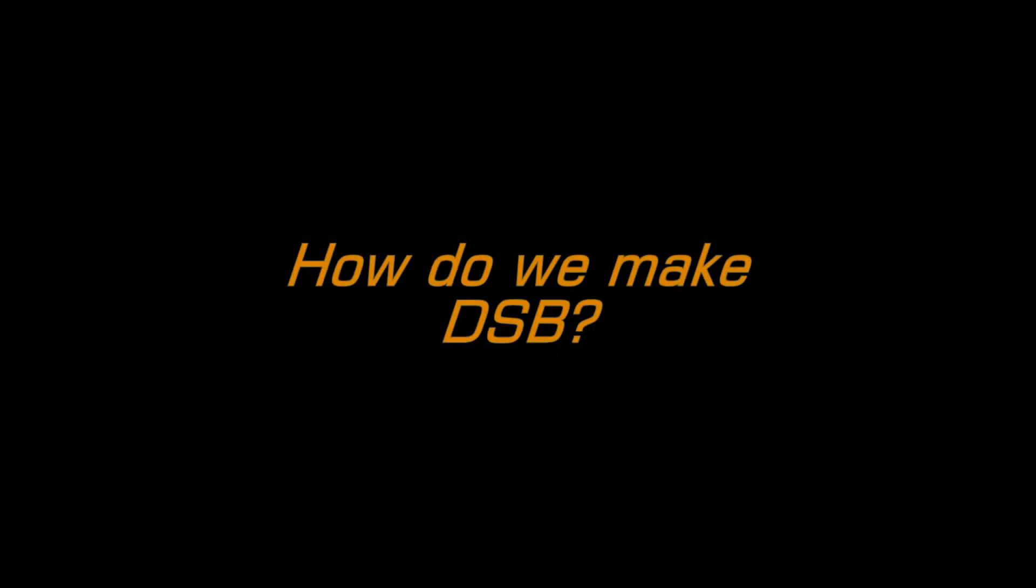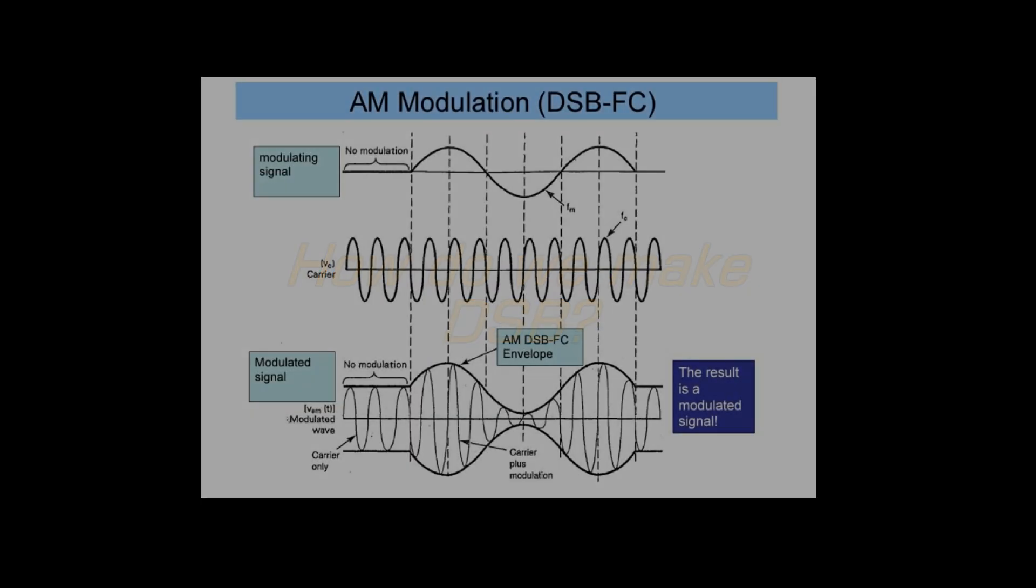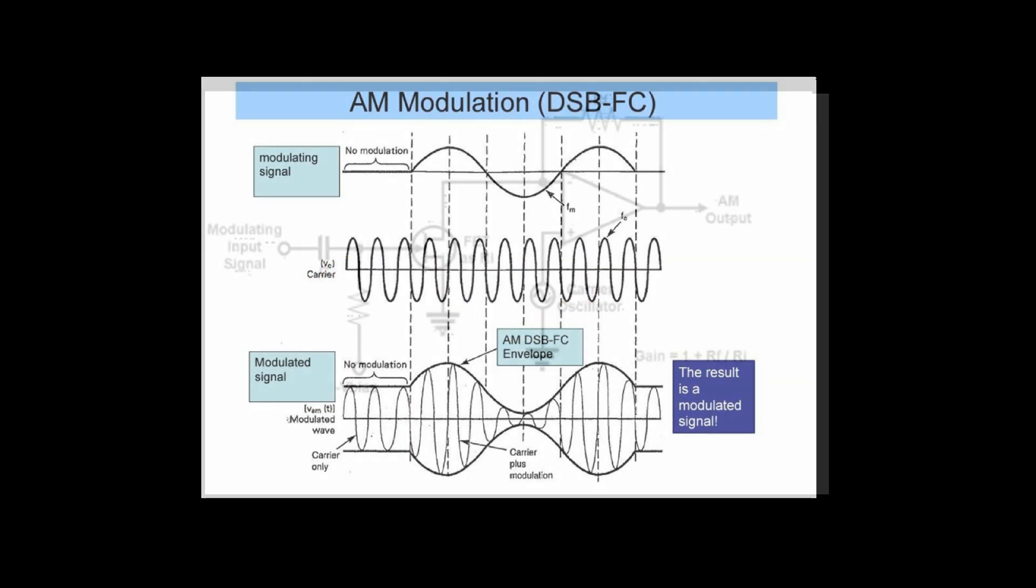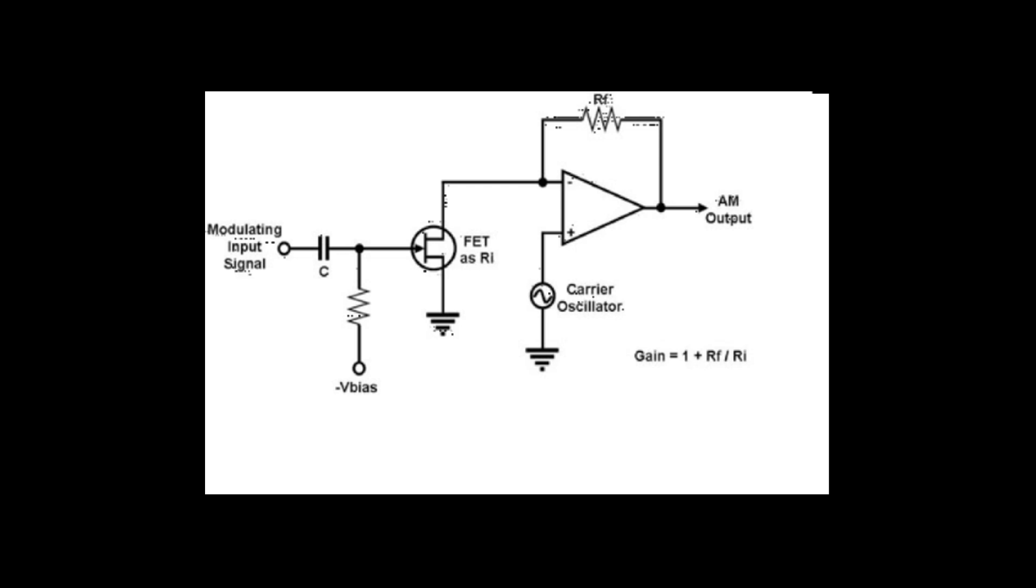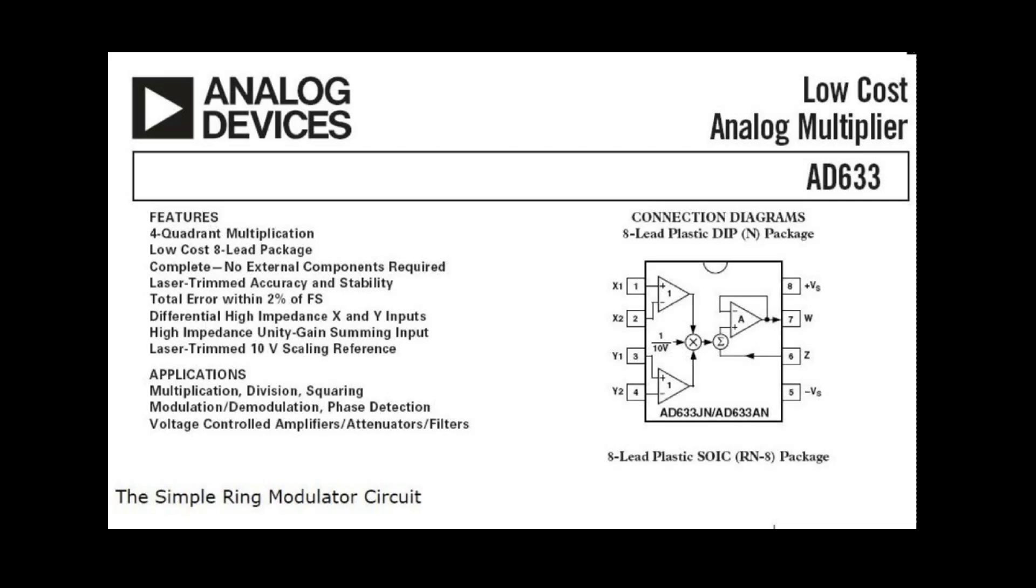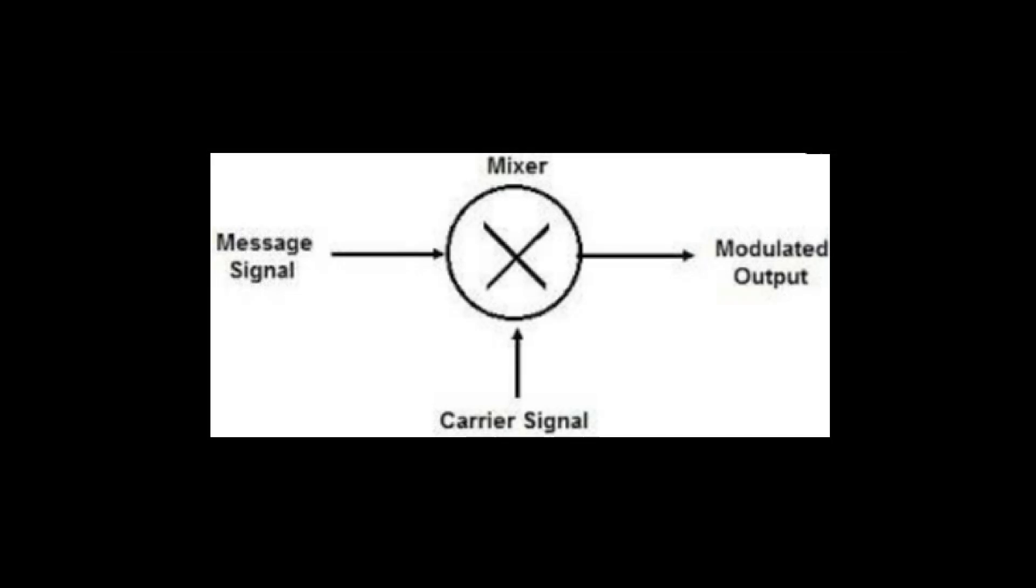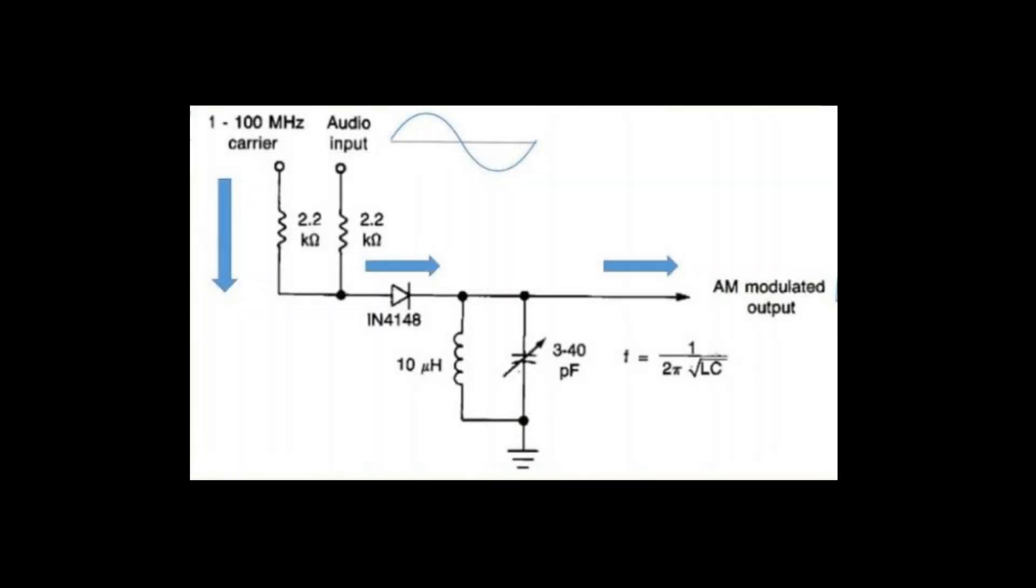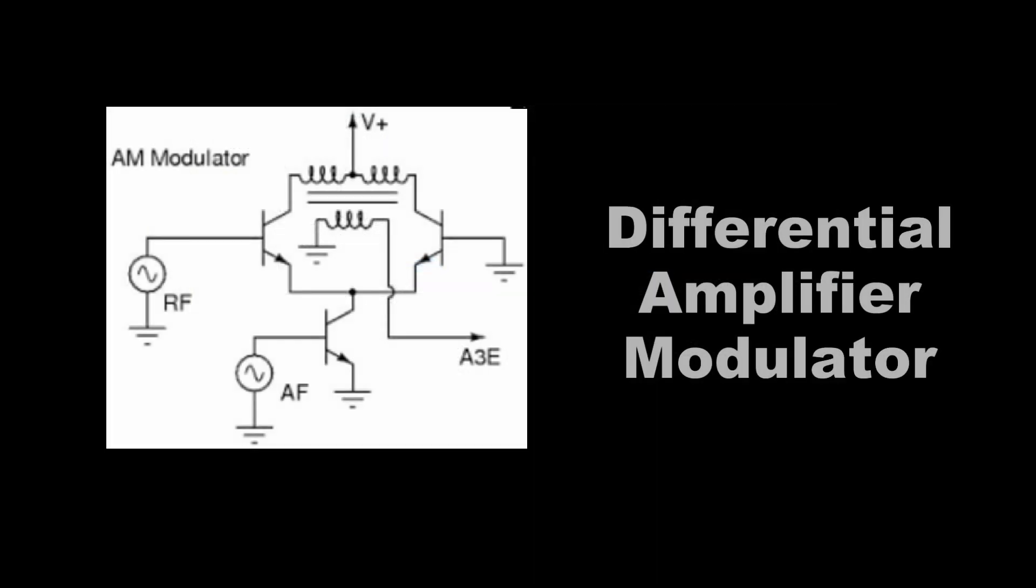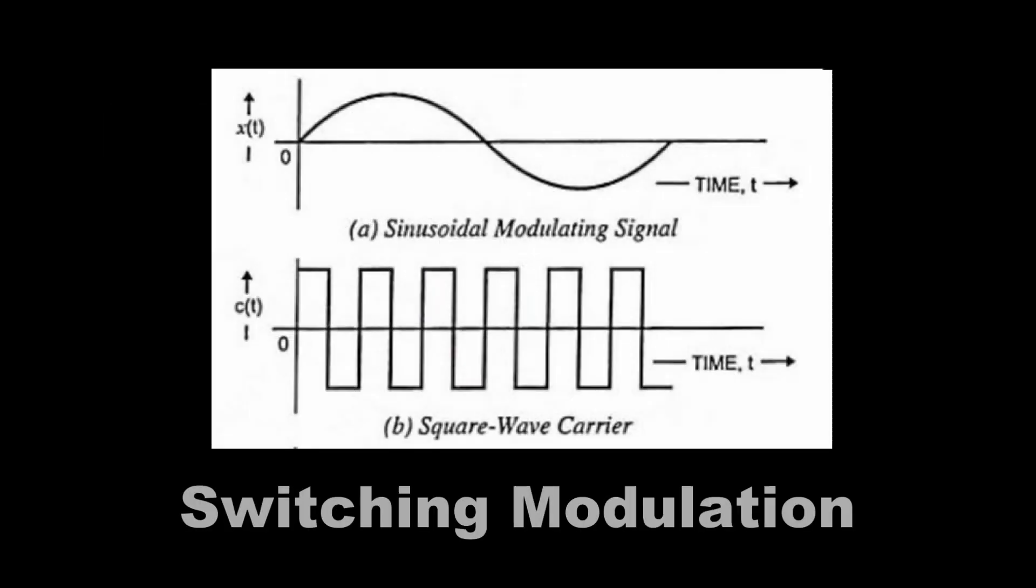So how do you make DSB? Well, you first have to start with standard AM. Make AM through any of the processes you know. Analog multiplication, non-linear junction mixing, sometimes called product modulation, choppers or commutation, high level mixing or modulation, like standard high level plate.